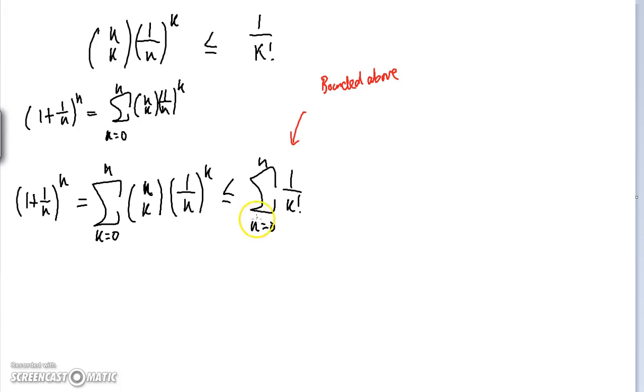If we show that and we also show that 1 plus 1 over N to the power of N is a monotonic increasing sequence, then we prove by the monotone convergence theorem that the limit as N approaches infinity of 1 plus 1 over N to the power of N indeed exists. So this is our inspiration. We want to show that this summation over here is bounded above.